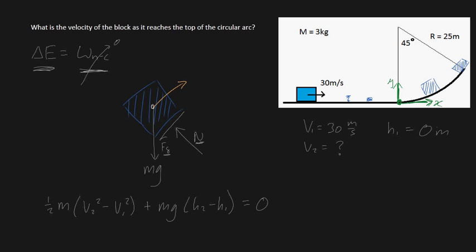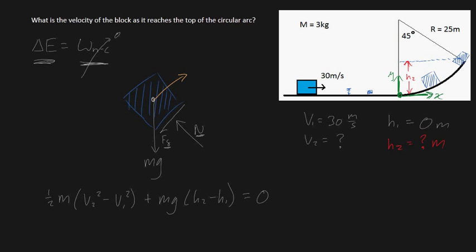What's h2? h2 is the distance from the center point of your mass to your axis. This is going to be h2, this distance here. Let's solve for h2. We need to know a little bit of geometry, so let's get started.